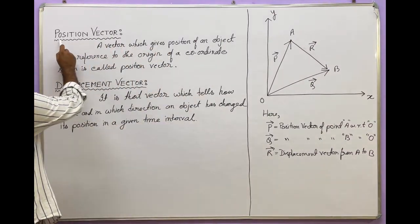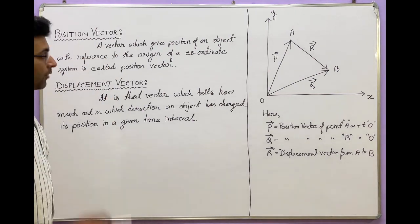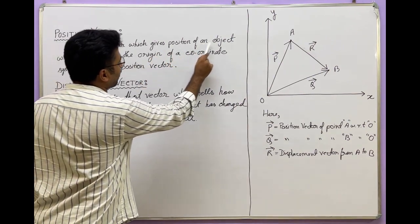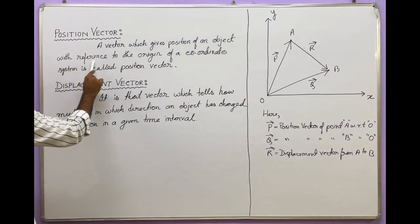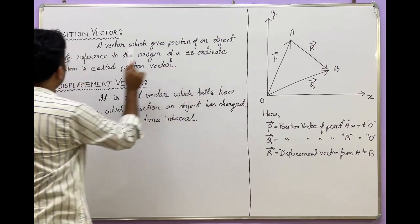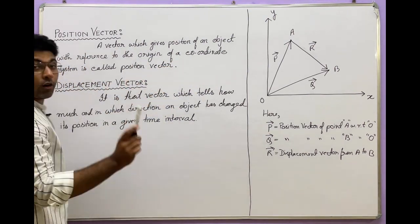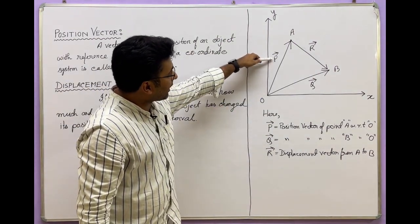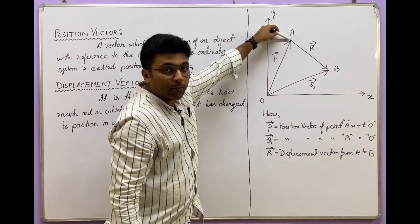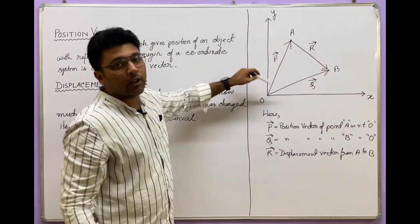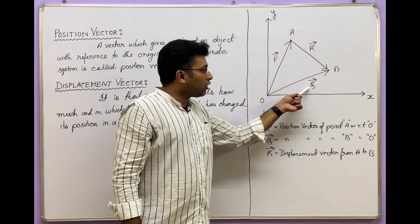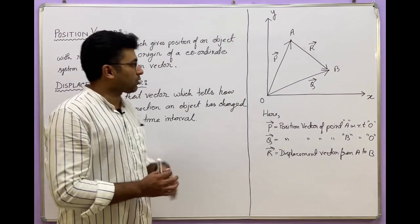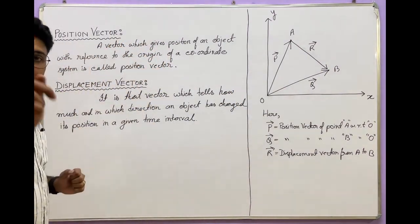Definition of position vector: a vector which gives the position of an object with reference to the origin of a coordinate system is called the position vector. So P-vector is the position vector of point A with respect to the origin, and Q-vector is the position vector of point B with respect to the origin.